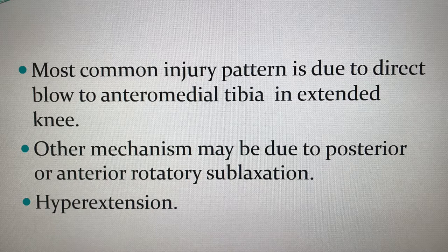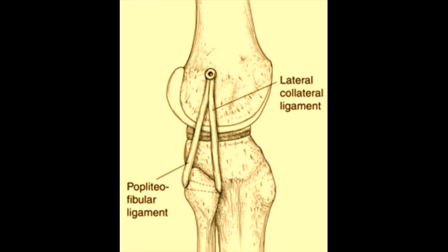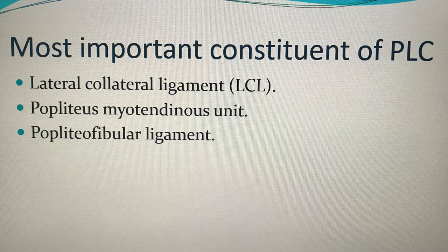A laterally directed force will lead to impaction injuries between the medial femoral and the tibial condyles. This will result in a kissing contusion of the structures, and this can be a hint to the presence of posterolateral corner injury. You have to look at the three major structures: the lateral collateral ligament, the popliteus myotendinous unit, and the popliteofibular ligament.